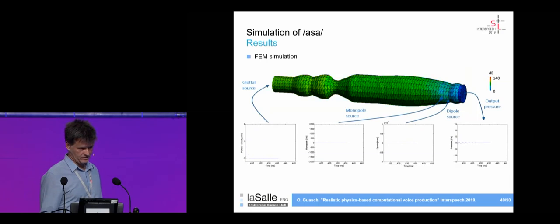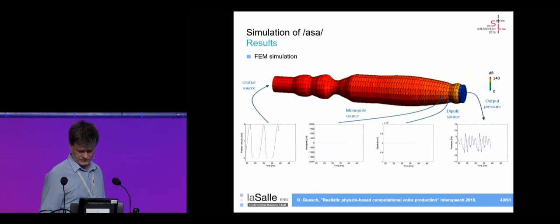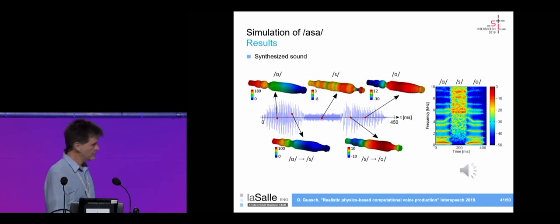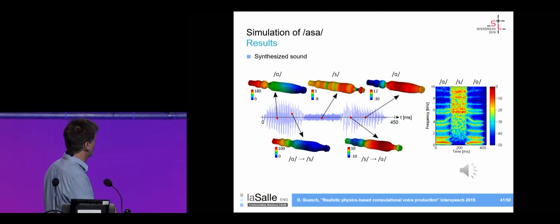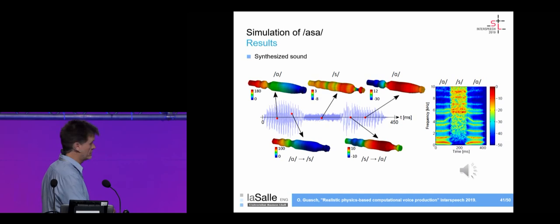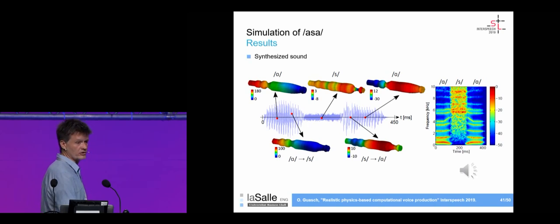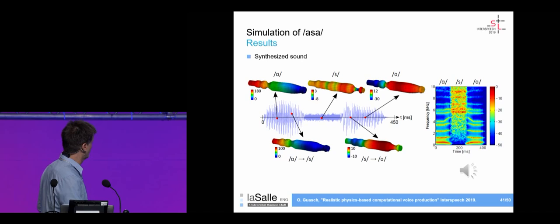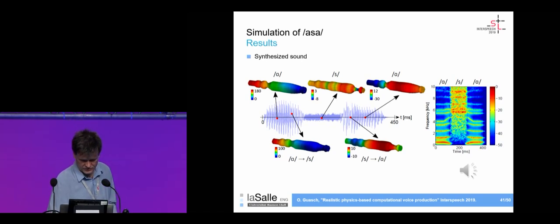The spectrogram clearly shows the formants of /a/, then the shift to the /s/ — where sound pressure is concentrated at high frequencies — and then the return to /a/ formants. This allows us to listen to the generated 'asa' sequence.